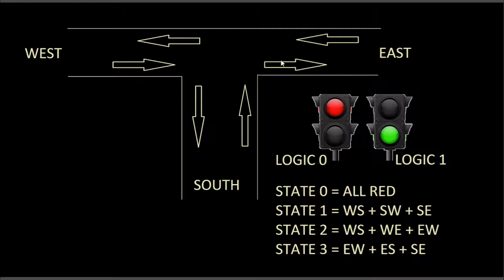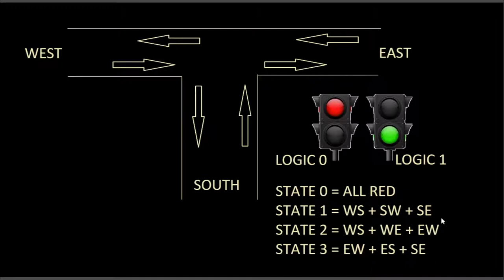How many lights do we need? We need one light to control traffic going horizontally from east to west, one light that will control east to south, one light that will control west to east, one that goes west to south, and then two lights for south to east and south to west. So in all we need a total of six lights: one for west to south, one for south to west, one for south to east, one for west to east, one for east to west, and one for east to south. I think that covers the entire spectrum.